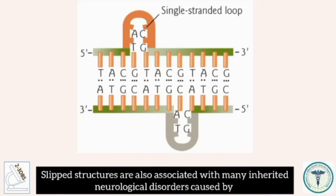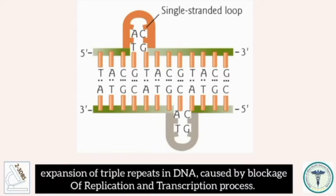Slipped structures are also associated with many inherited neurological disorders caused by expansion of triple repeats in DNA, caused by blockage of replication and transcription.